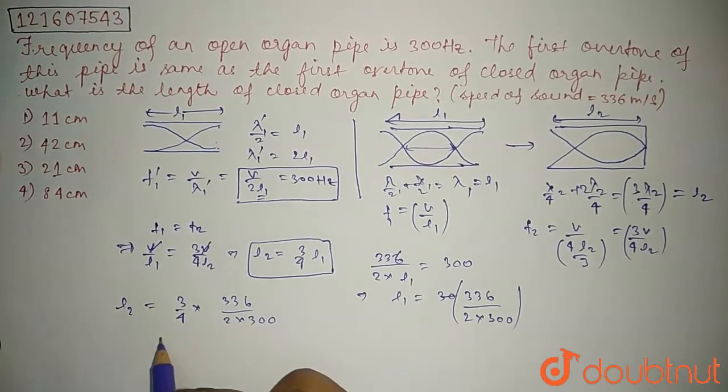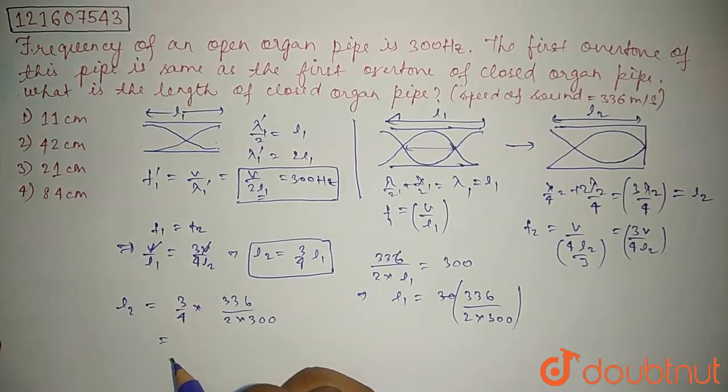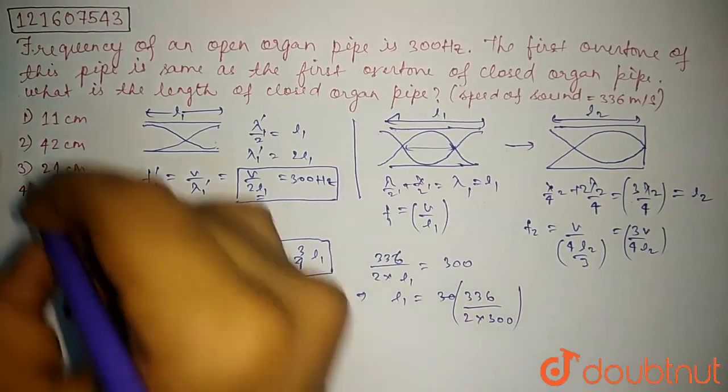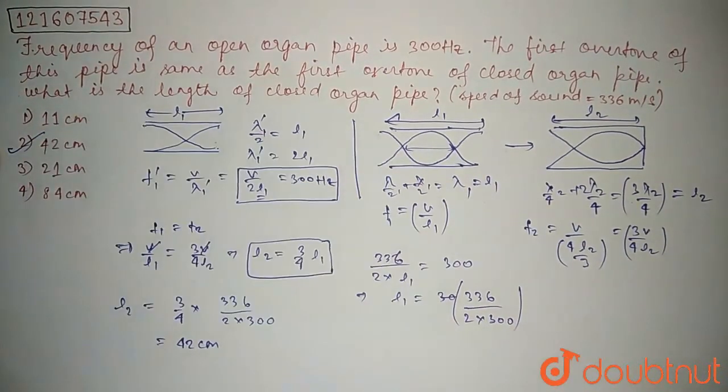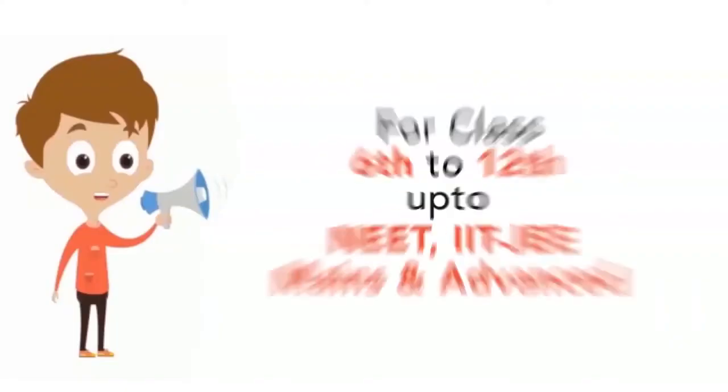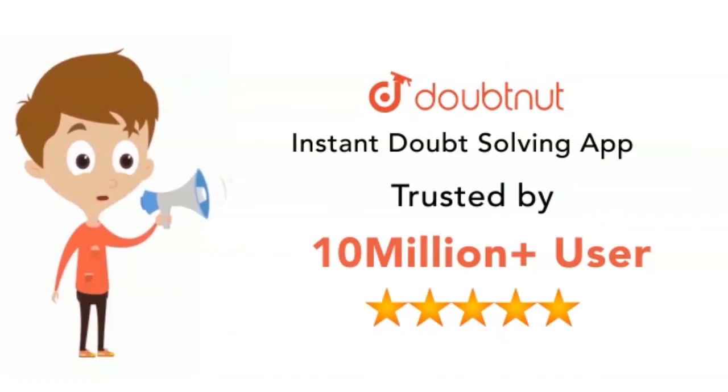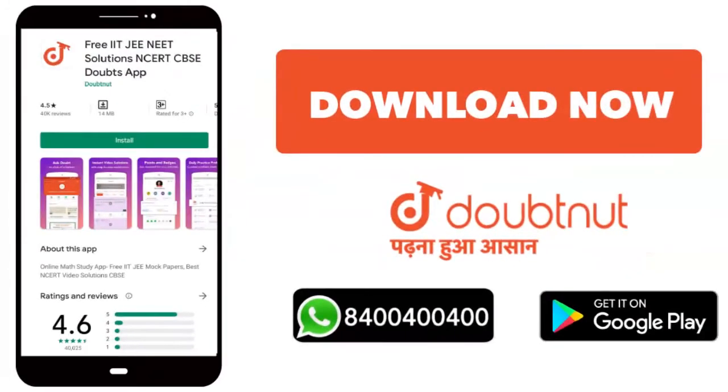Which is equal to... solving, 336 gives us 42 cm, so our correct option is 2, 42 cm. Thank you. Classes 6 to 12, NEET, IIT JEE Mains and Advanced. 10 million students. Download Doubtnet or WhatsApp your doubts 8444.